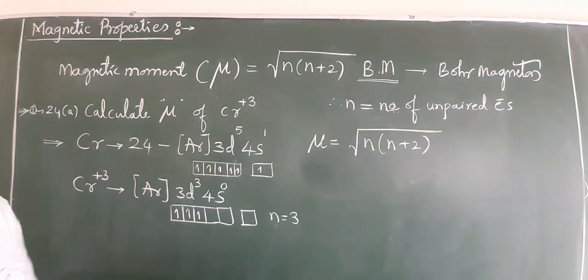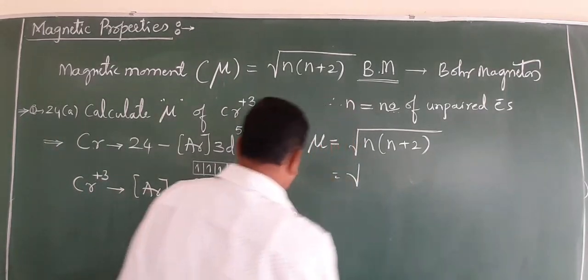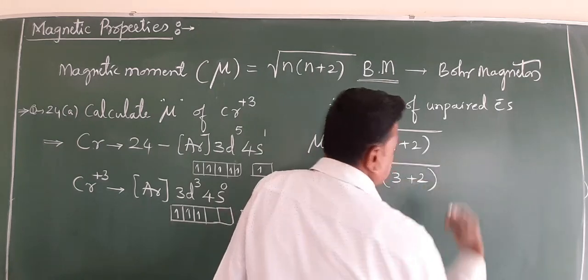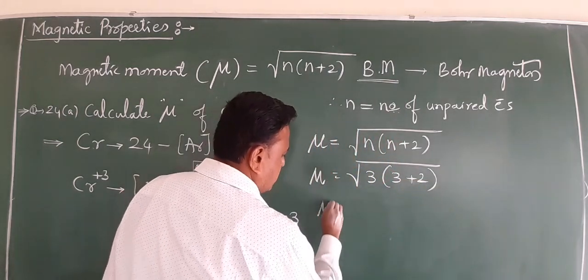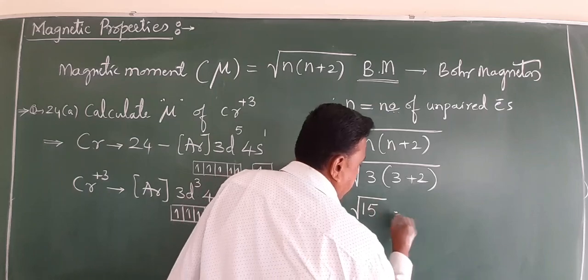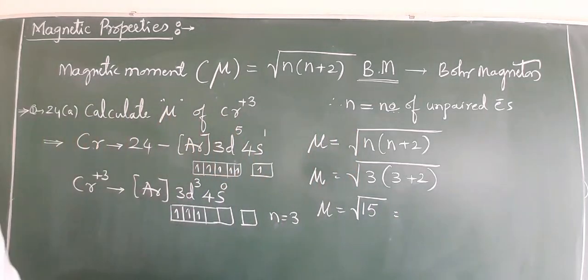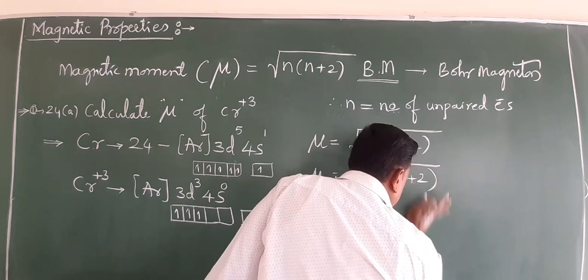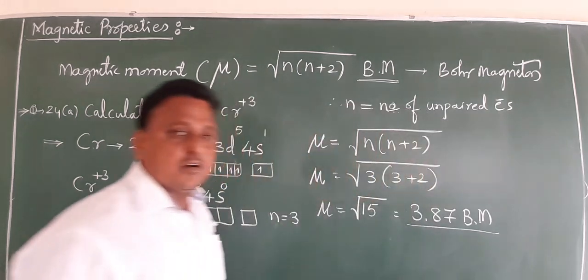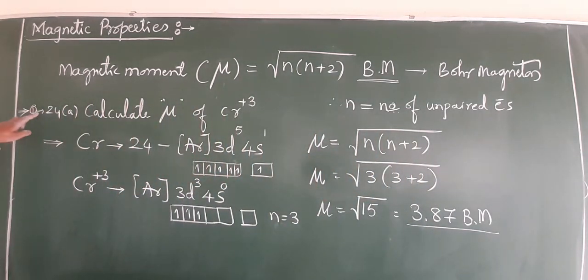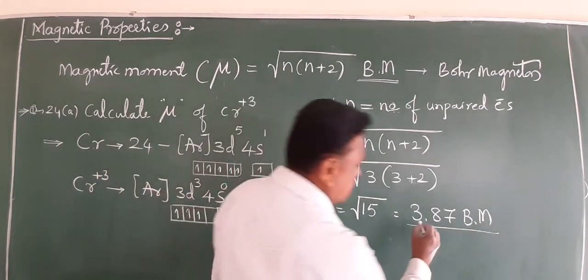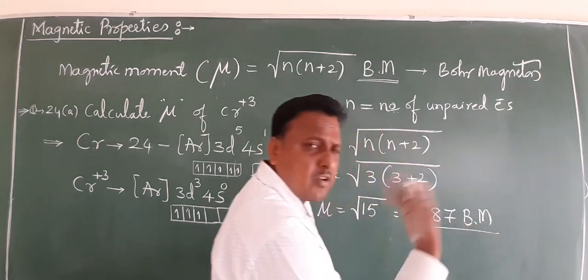If you get the n value, you can easily calculate μ. μ = √(n(n+2)). n is 3, so μ = √(3(3+2)) = √(3×5) = √15. What is the root 15 value? You can calculate it with a calculator. The value of chromium plus 3 magnetic moment is 3.87 BM.